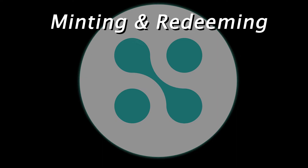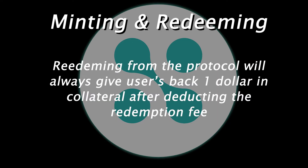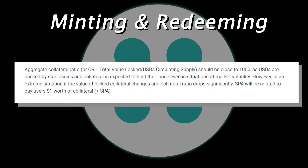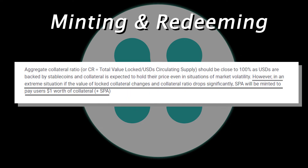Redeeming from the protocol will always give users back $1 in collateral after deducting the redemption fee. In case of the aggregate collateral ratio of USDS dropping and USDS becoming under-collateralized, Sparex will mint SPA tokens which will be given to users wanting to redeem. This ensures that users can always expect $1 worth of collateral when redeeming, regardless of market conditions.